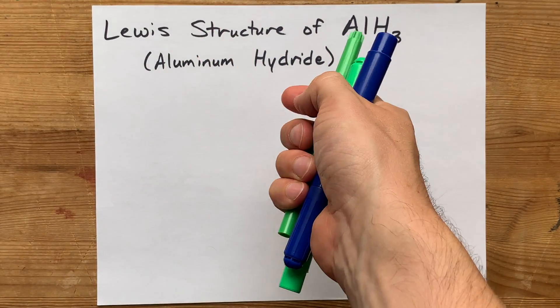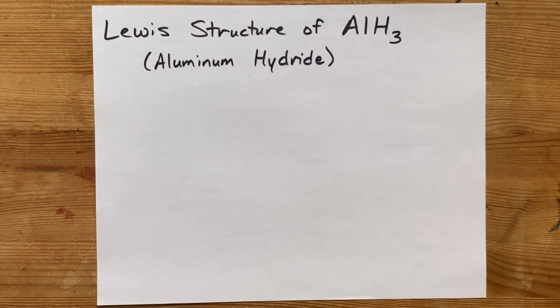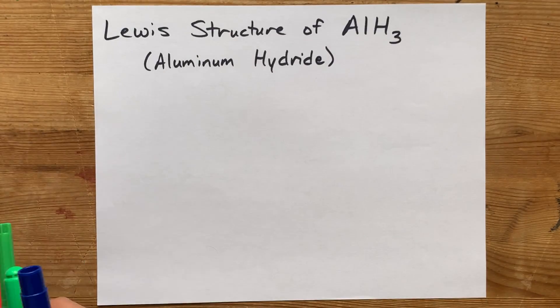We're going to draw the Lewis structure for AlH3, which is aluminum hydride.